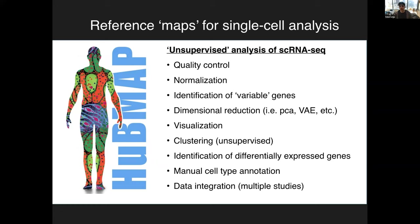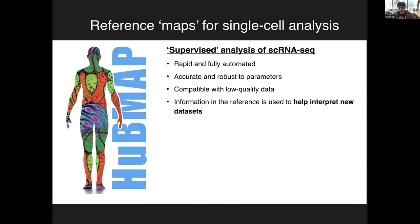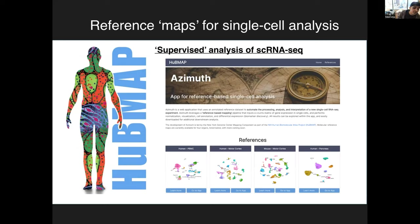All of this is challenging with just one sample, and particularly so when doing data integration across multiple studies. So what we'd like to do, especially once we've built reference maps, is to enable people to rapidly map their data onto those references — just as reference maps transformed genomics. We want to build a supervised platform that is rapid, fully automated, accurate, robust to various parameter choices, and compatible with lower quality data. We want it to be interactive, fun to use, and fully reproducible and versioned so the community can build on top of it.